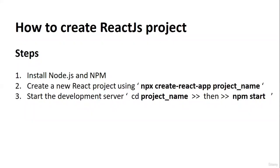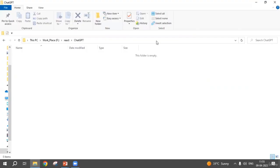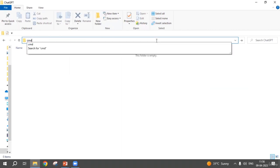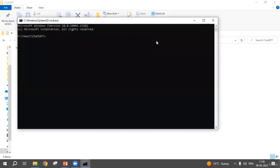In this lecture, we are going to learn how to create a React project. These are the basic simple steps: first, your system should have Node.js and npm installed. Second, you create a React project using the command 'npx create-react-app' followed by your project name. Just open a folder where you want to create the project, open a command prompt, and type 'npx create-react-app'.